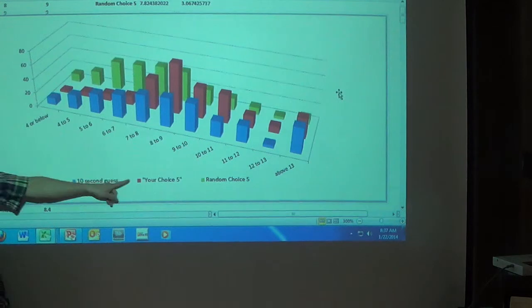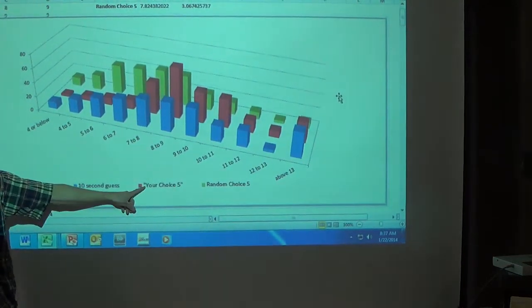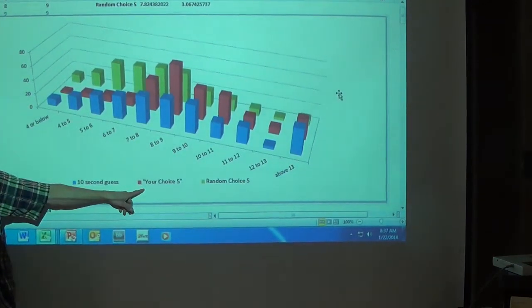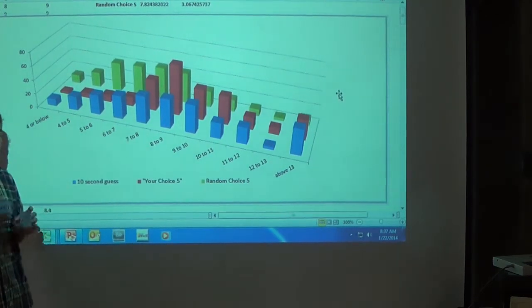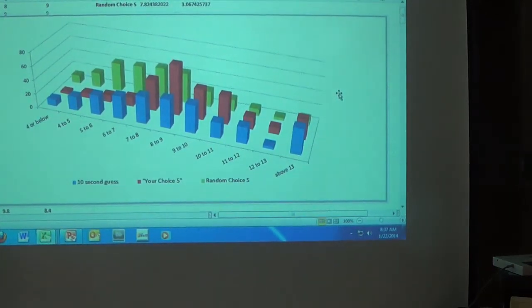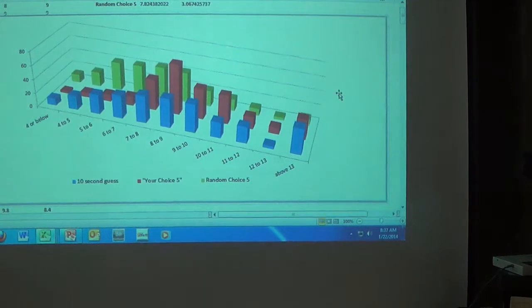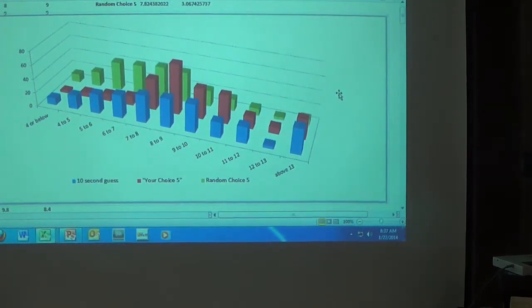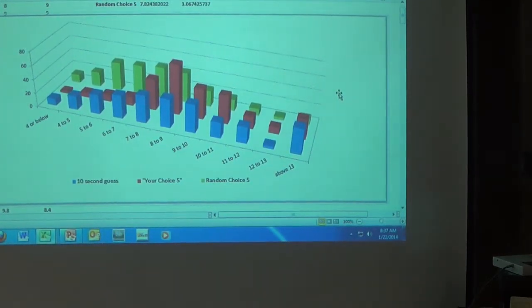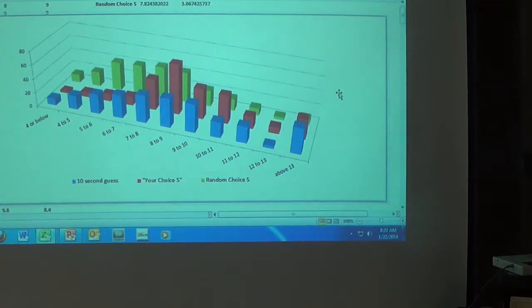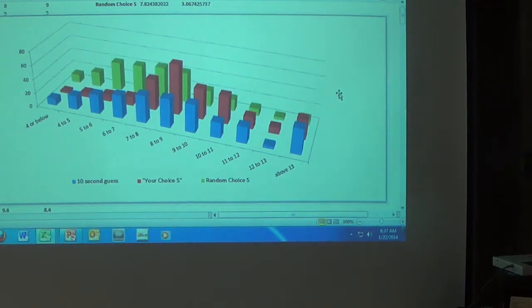Red behind that is the your choice 5. That means your job was to pick 5 rectangles that you thought were the most representative of the entire 100, and then the green guy in the back is called the random choice 5. The random choice 5 is where you use technology to generate 5 random numbers and then you pick those 5 rectangles. Now, it's interesting to note the actual average area of one of those rectangles is 7. And notice the difference in what was targeted by each of the groups.